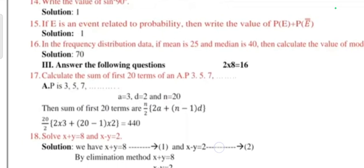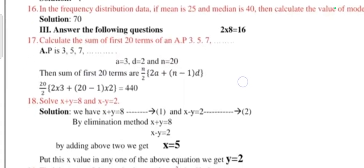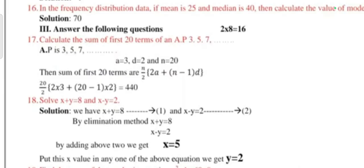Next main has two more questions. Question 17: Calculate the sum of first 20th term of AP 3, 5, 7. I'm not explaining the answer because the video will become more longer, so copy down the answers. Question 18: Solve x + y = 8 and x - y = 2. By solving we will get x value 5, y value 3.